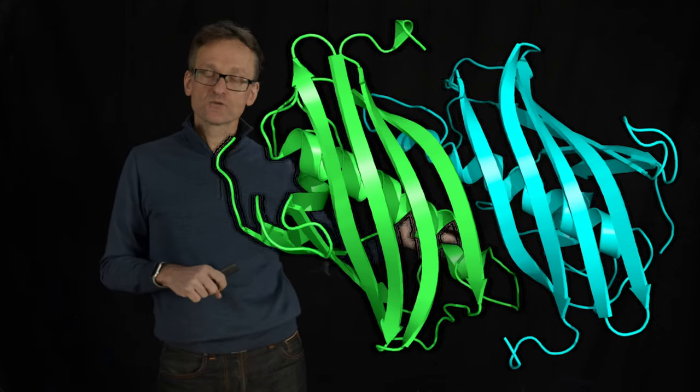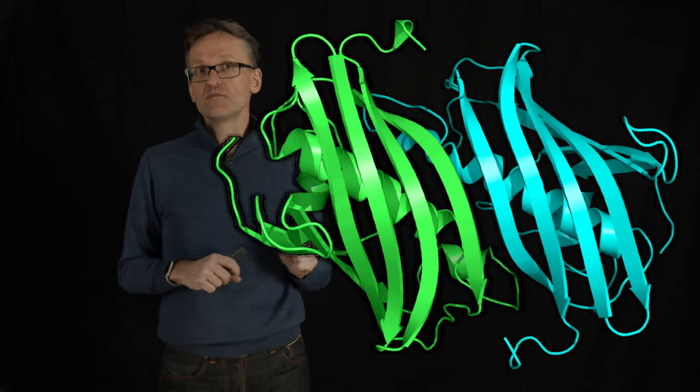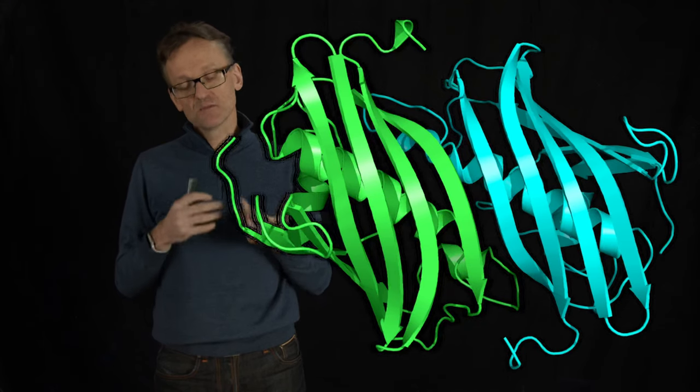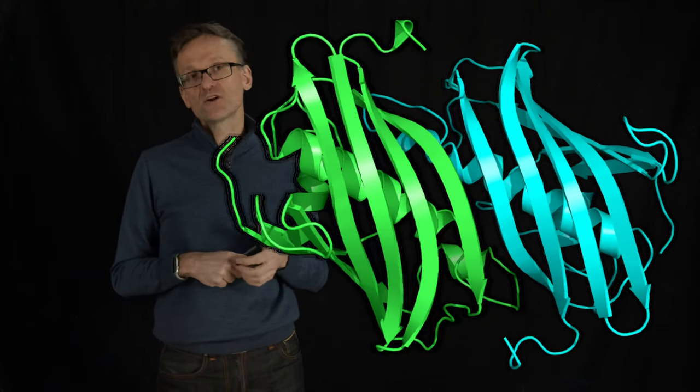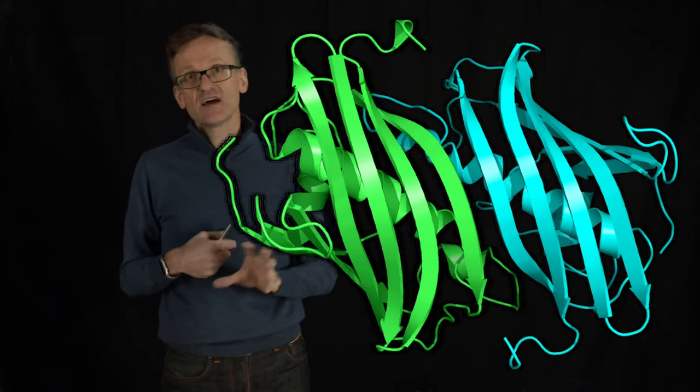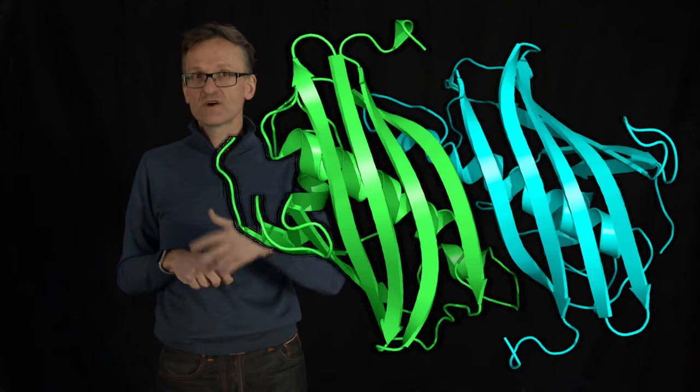These structures are going to become so large that whenever a new monomer, the repeating unit, is synthesized and expressed in the cell, it's going to be very likely that it will quickly find one of the larger aggregates, the so-called oligomers, the multimers, and attach to that. And possibly this could be the reason why the growth is somehow accelerating exponentially.